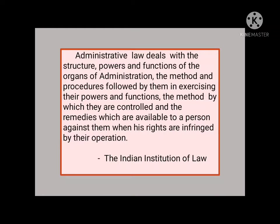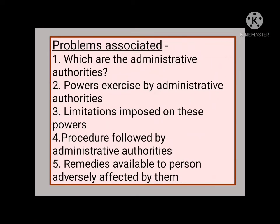Summing up these two definitions, we can identify the problems associated with administrative law, which are nothing but its scope. These are: first, which are the administrative authorities; second, which powers are to be exercised by them; third, the limitations imposed on these powers; fourth, the procedure followed by the administrative authorities; and fifth, which remedies are available to a person adversely affected by the action of the administrative authorities.